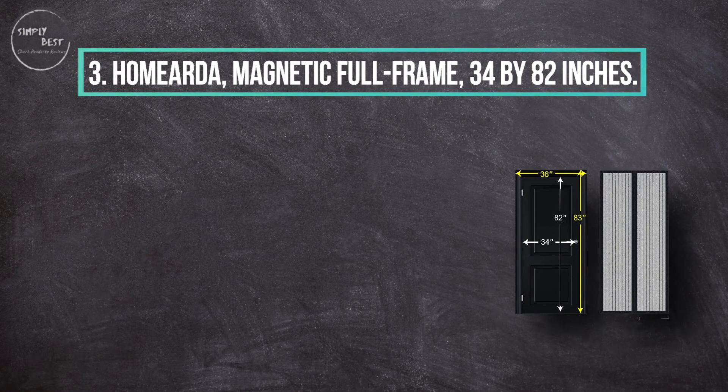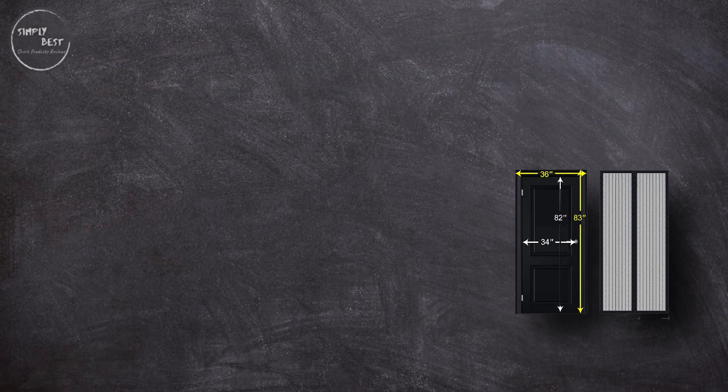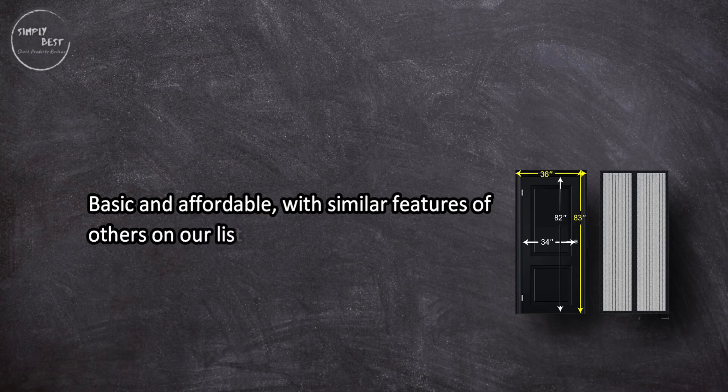Number three: Homarder Magnetic Full-Frame 34 by 82 inches. Basic and affordable, with similar features of others on our list such as sewn-in Velcro and easy installation.